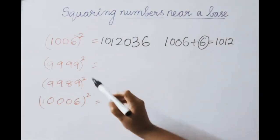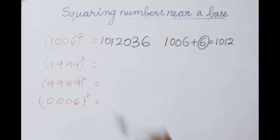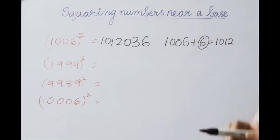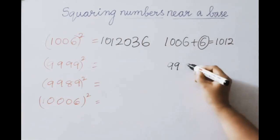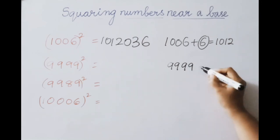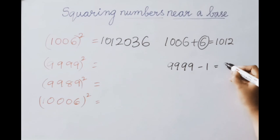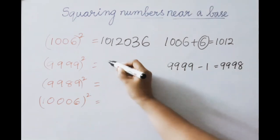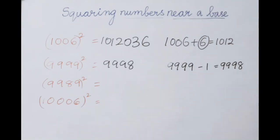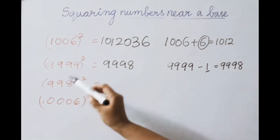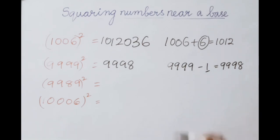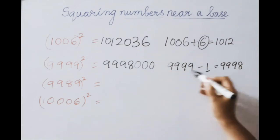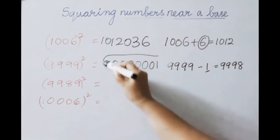Next example: 9999 squared. This number is nearer to 10000, so base is 10000. 10000 minus 9999 equals 1 — deficient value is 1. Subtract: 9999 minus 1 equals 9998 — first part answer. Square the deficient value: 1 squared is 1. Base 10000 means 4 digits allowed, so place 3 zeros: 0001. Therefore 9999 squared equals 99980001.